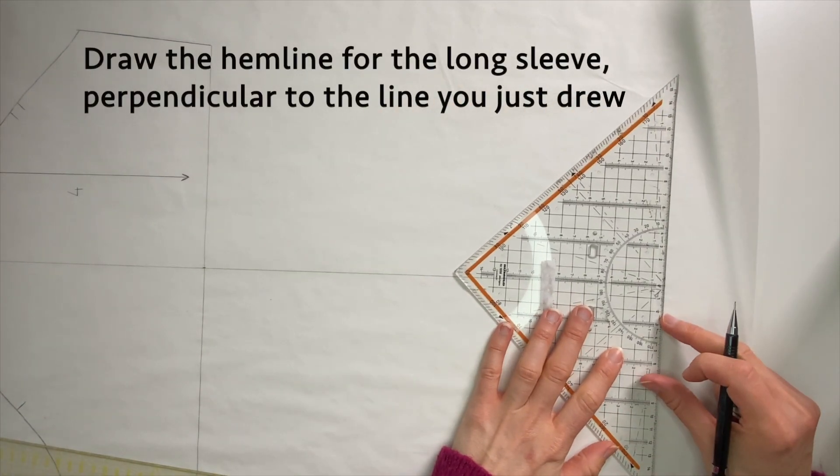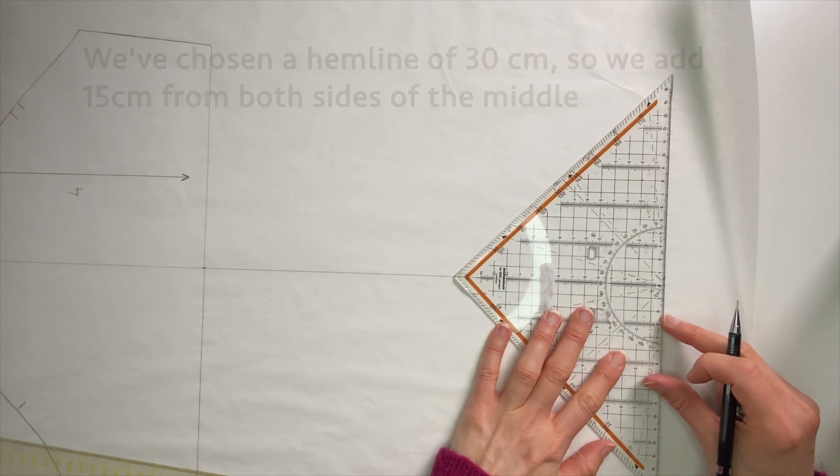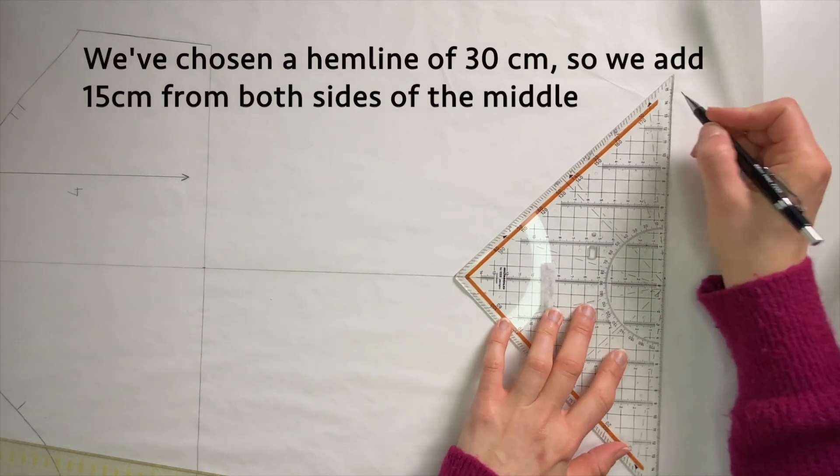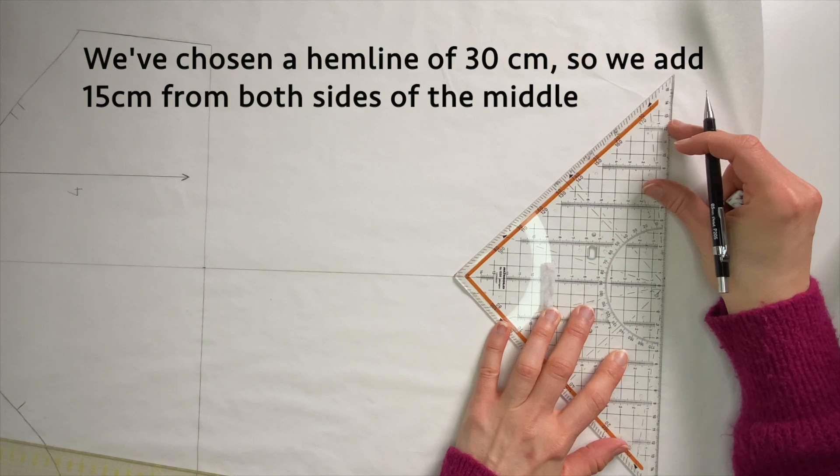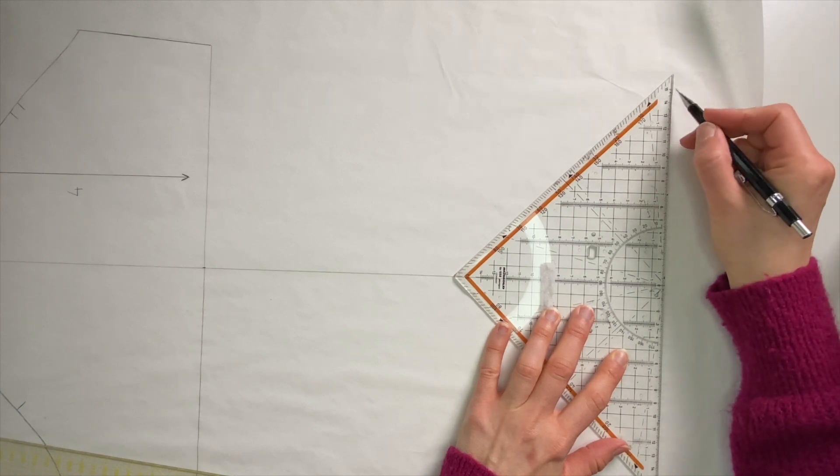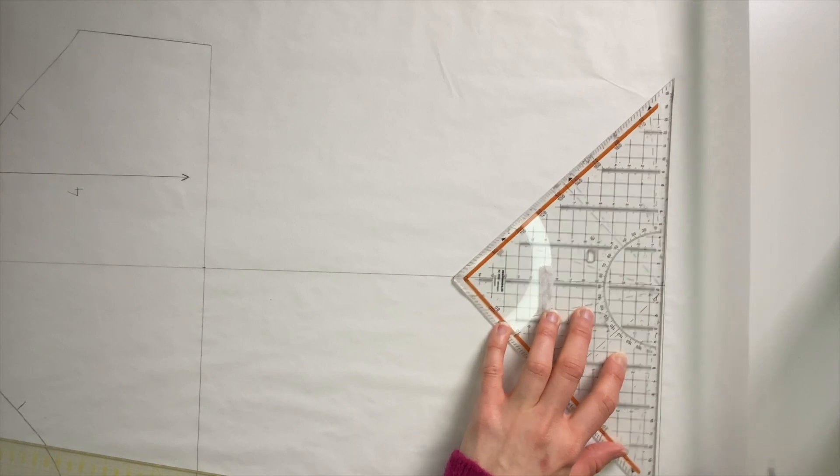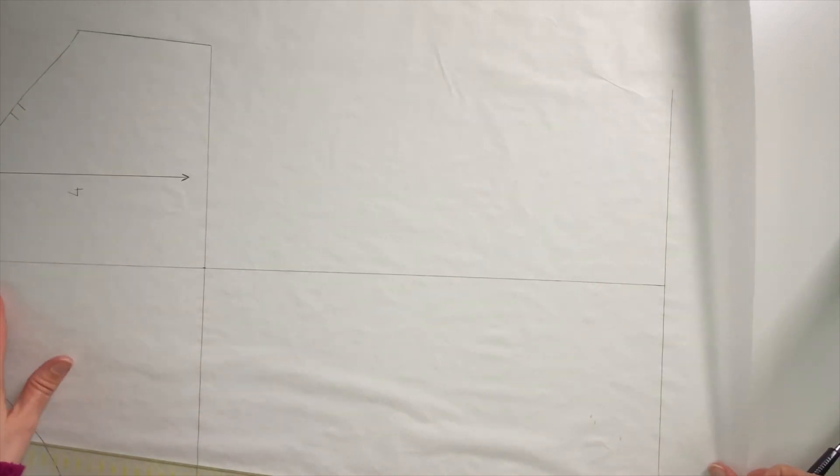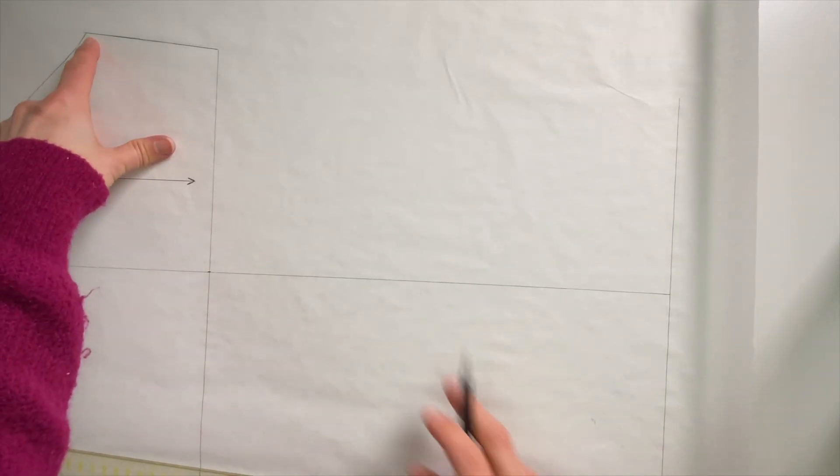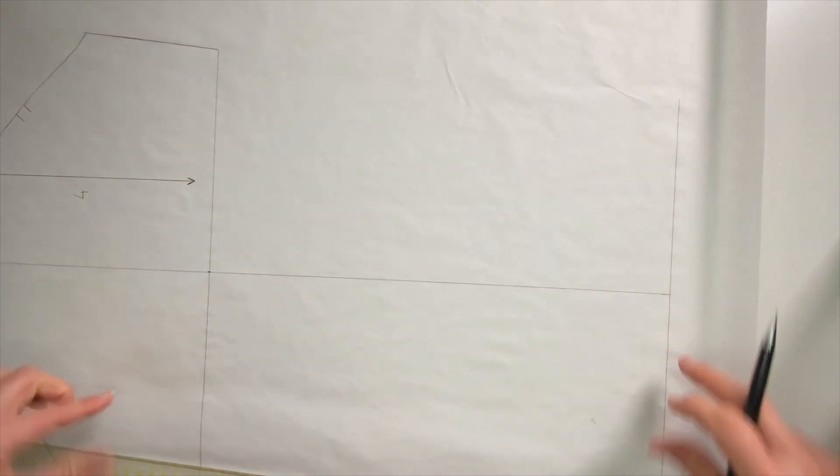We've taken for our model a hemline of 30 centimeters, so that's 15 centimeters on each side. And then we're going to connect the arm side with our new hem point on both sides.